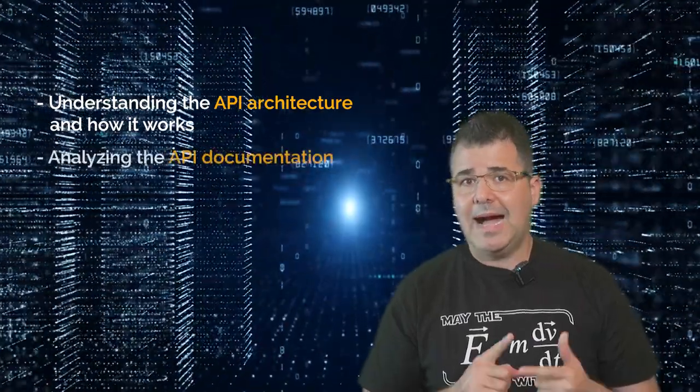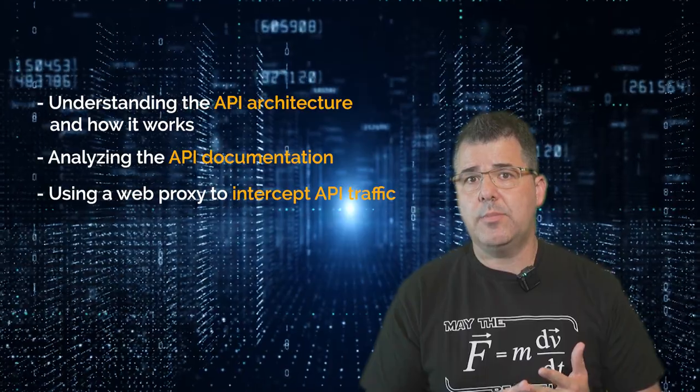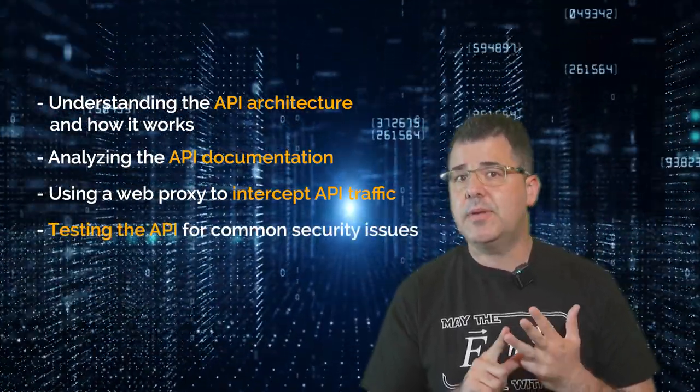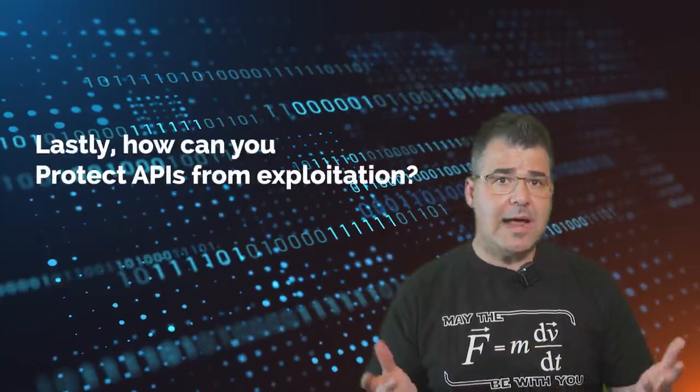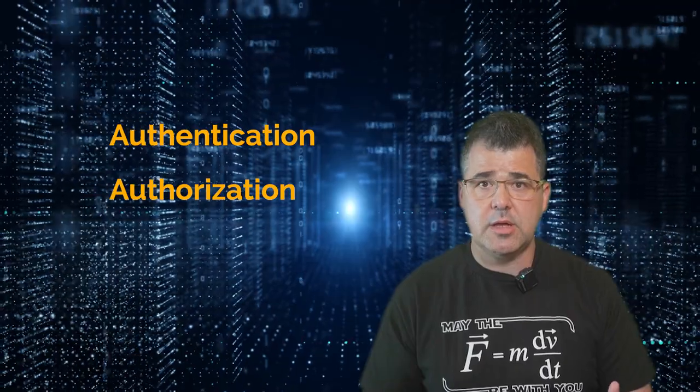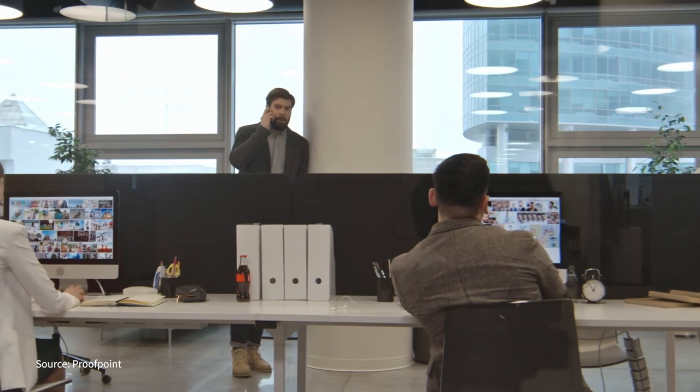Understanding the API architecture and how it works. Analyzing the API documentation. Using a web proxy to intercept API traffic. Testing the API for common security issues. So lastly, how can you protect APIs from exploitation? If you are on your path to becoming a cybersecurity engineer, then a part of your job may require you to be responsible for protecting this API from unauthorized access and misuse. And it is done by implementing security controls such as authentication, authorization, and encryption. Even by following simple cybersecurity principles, one can ensure that only authorized users can access their APIs and that the data is protected from being tampered with or stolen.